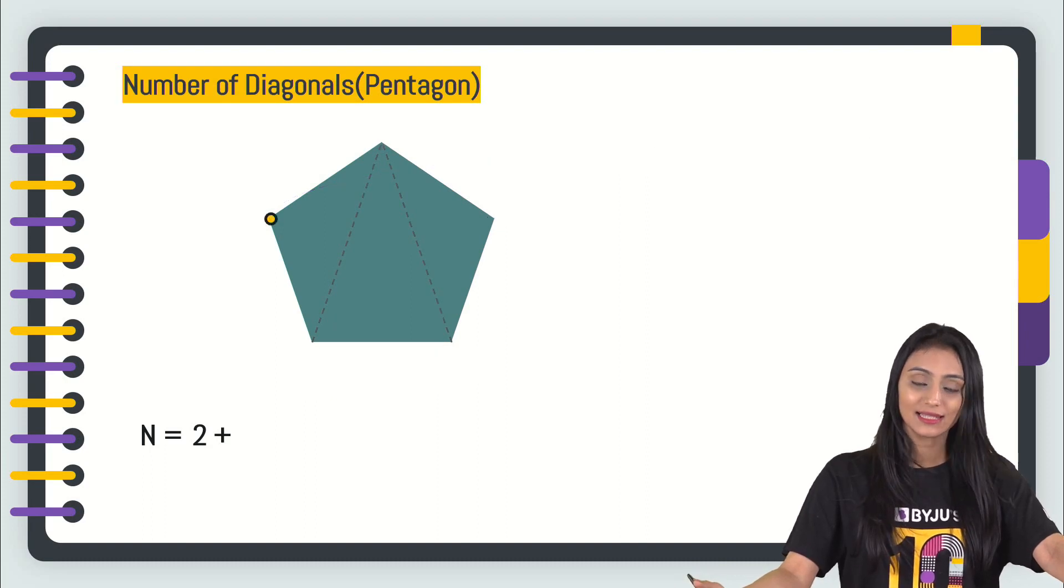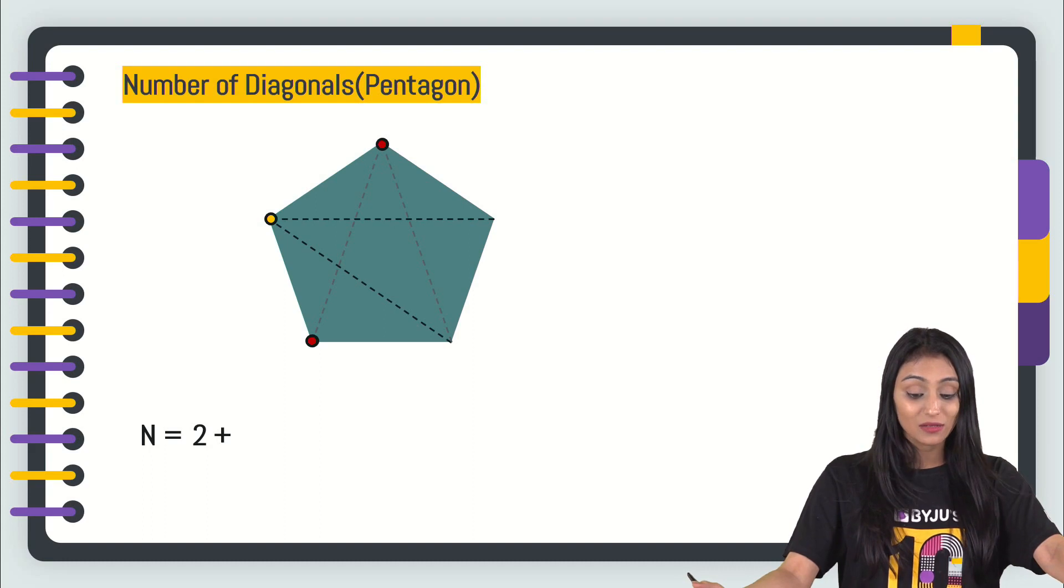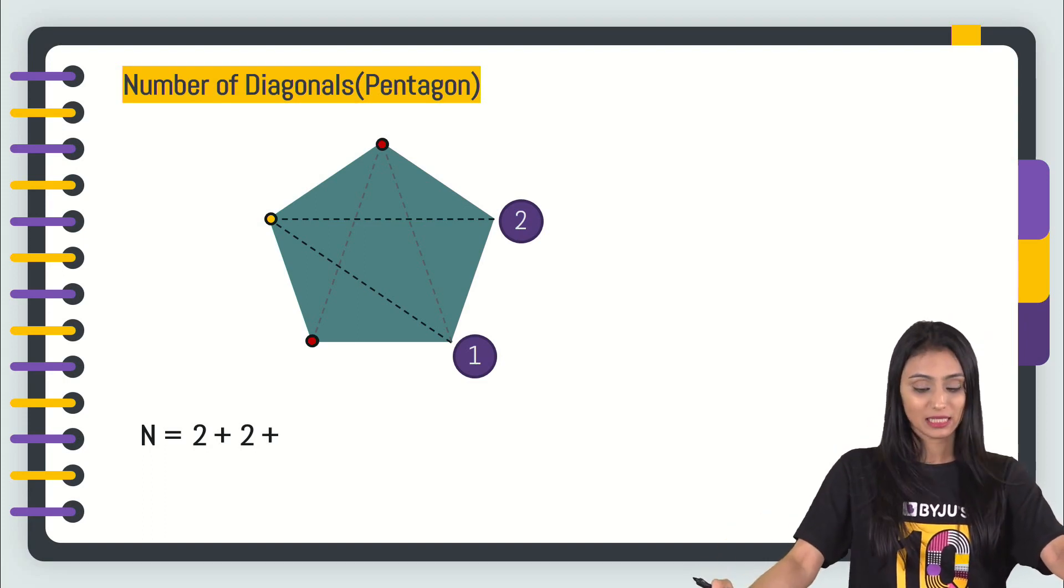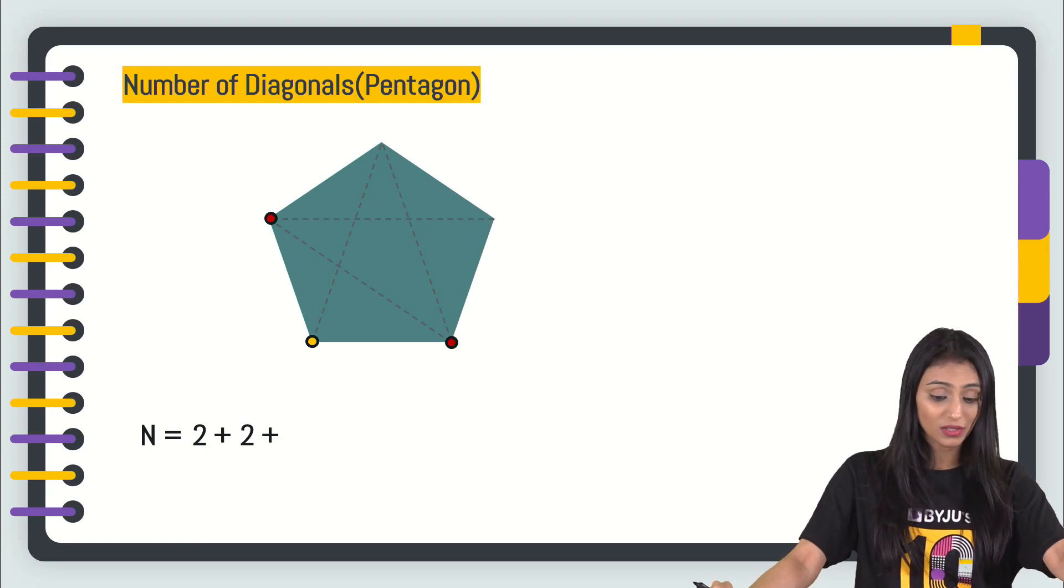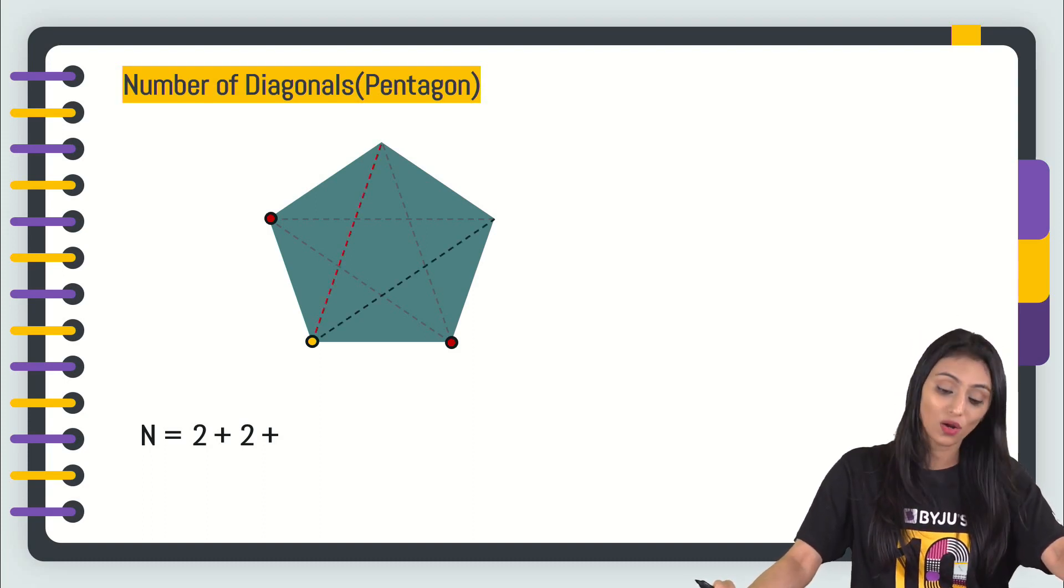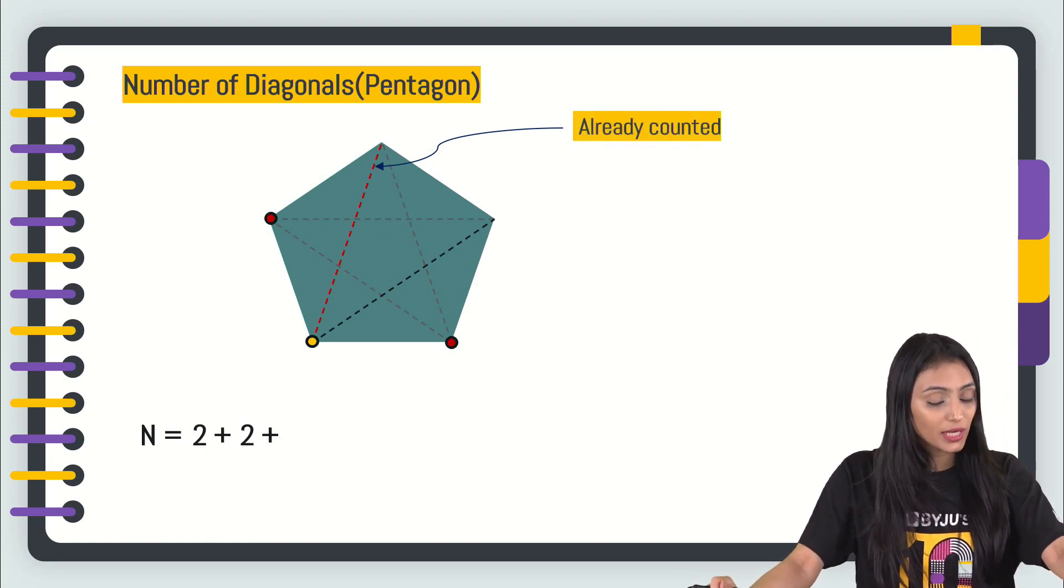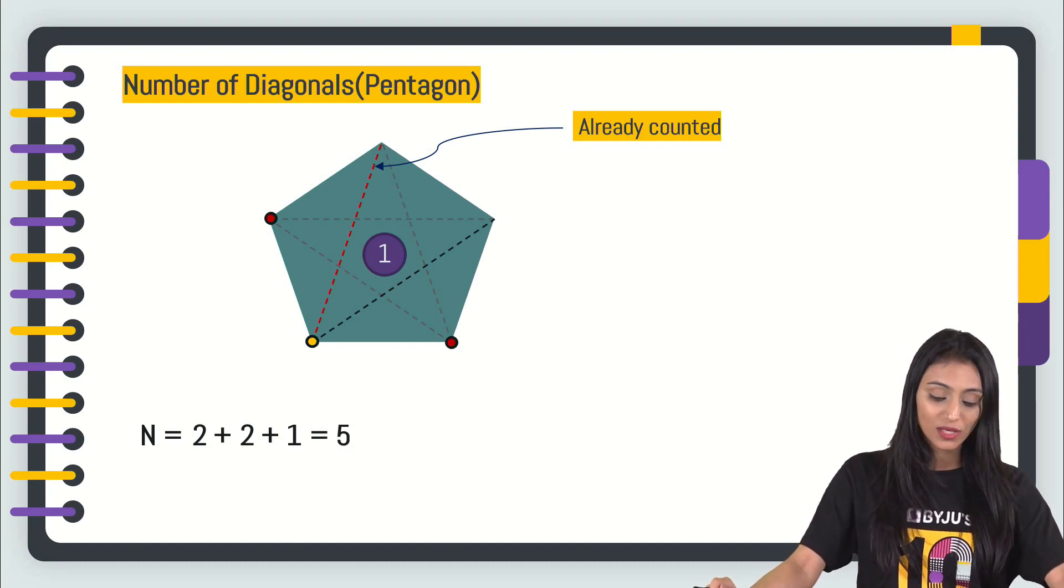Now if I consider another vertex, these are both the consecutive ones and now these are one and two, the non-consecutive vertices. So if I join them here, we get two diagonals again. Now let's consider another vertex. These are the consecutive ones, so we will not consider this. Over here again, two diagonals, but this has already been counted. So we'll not include this. This is going to be one this time. So in all, you see two plus two plus one, in all it is five. So there are total five diagonals possible for this.